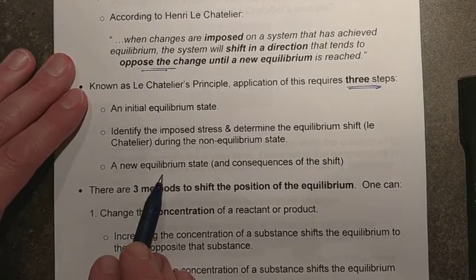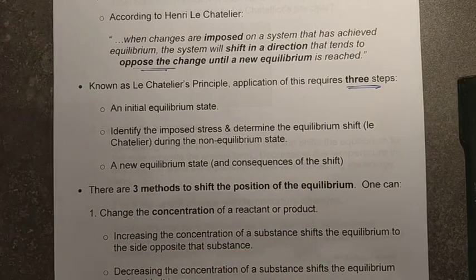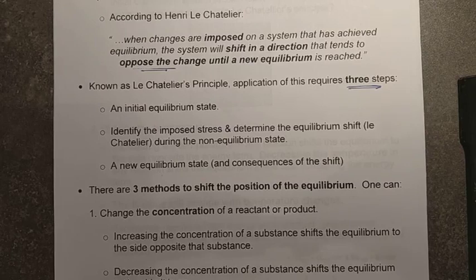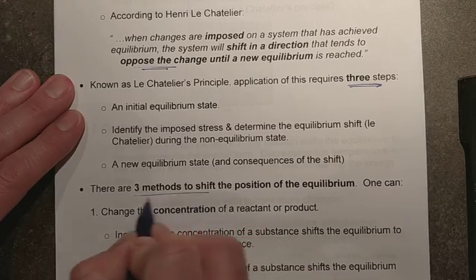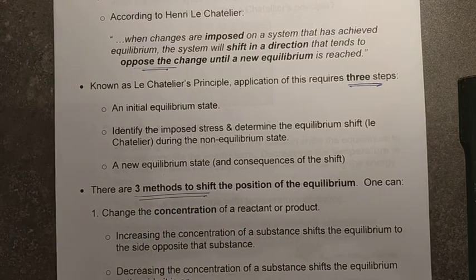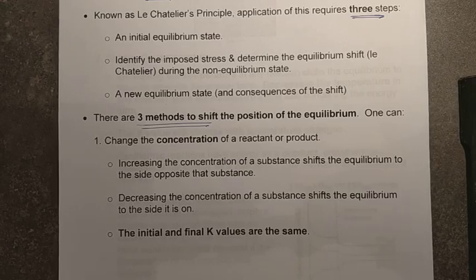We would ultimately get to a new equilibrium state depending upon the changes we make. These might be the same as before or different. We can look at things such as concentration, or pressure and volume arrangements, for these various stresses. We will study three different ways to shift the position of equilibrium — three ways in which we are going to cause stress — and the reaction is going to oppose that stress and achieve a new equilibrium.